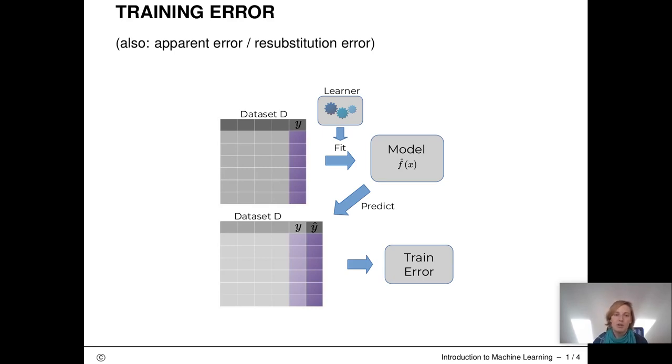This error is called the training error as it is computed on the training data. Makes sense. It is often called the apparent error or the resubstitution error.